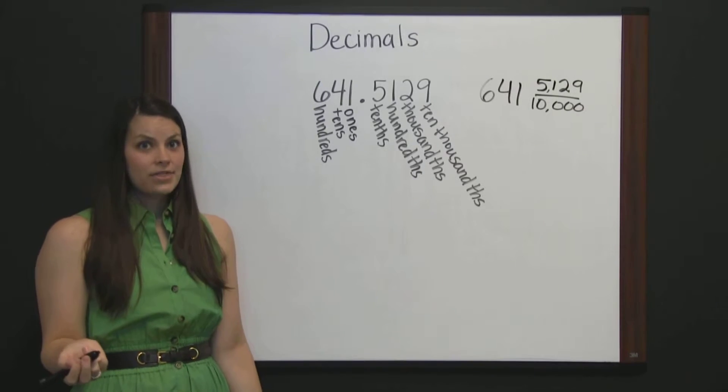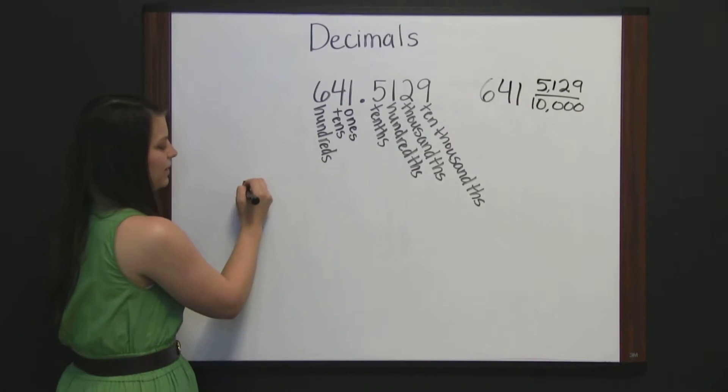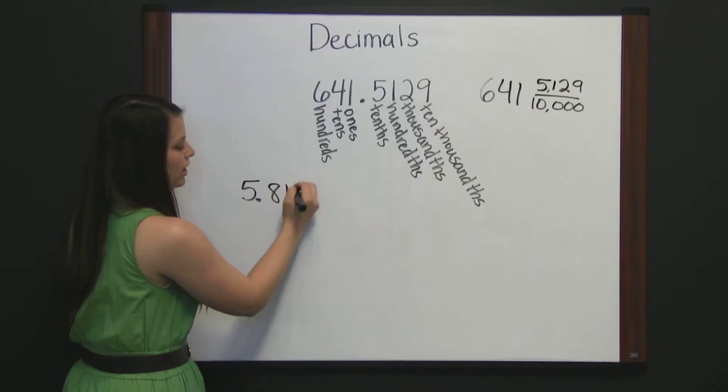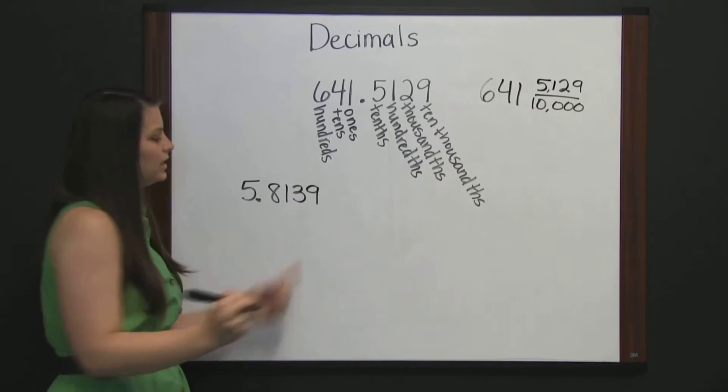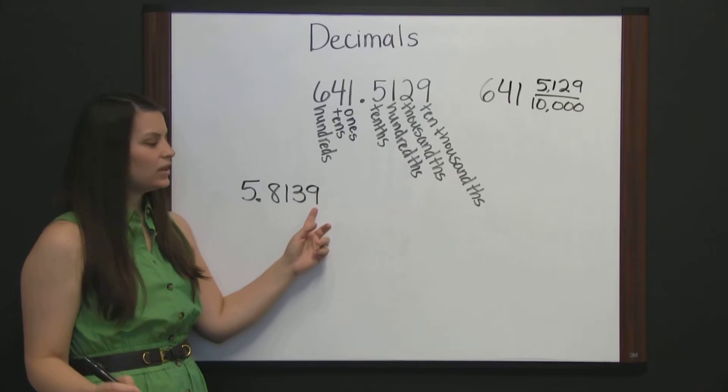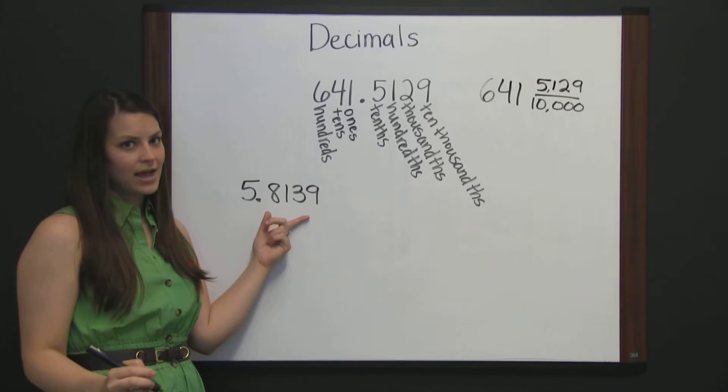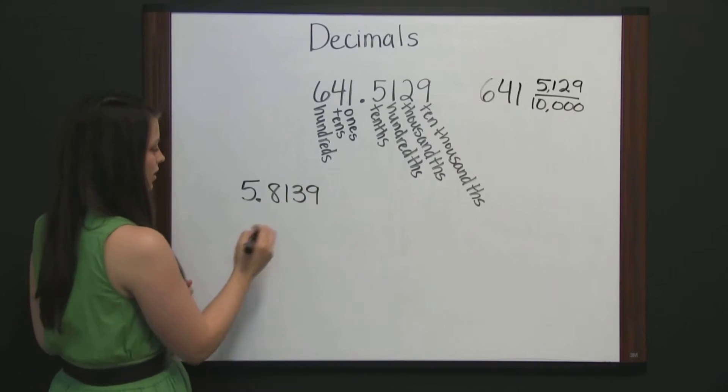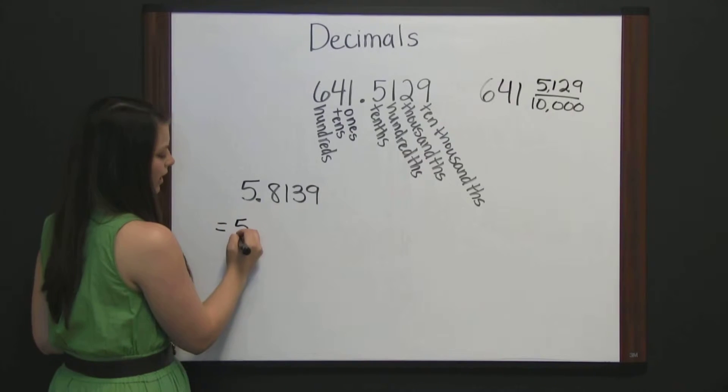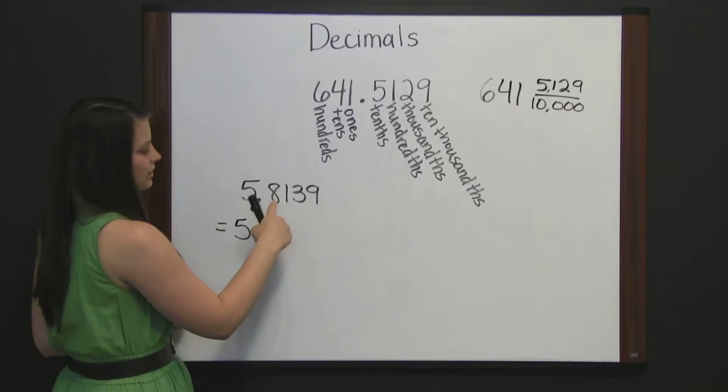Let's look at another decimal. Five and 8139 ten thousandths. We could write this number as an improper fraction by taking the five plus, this